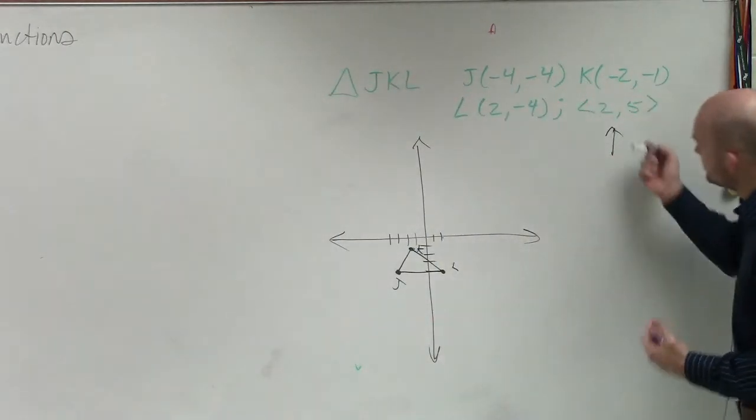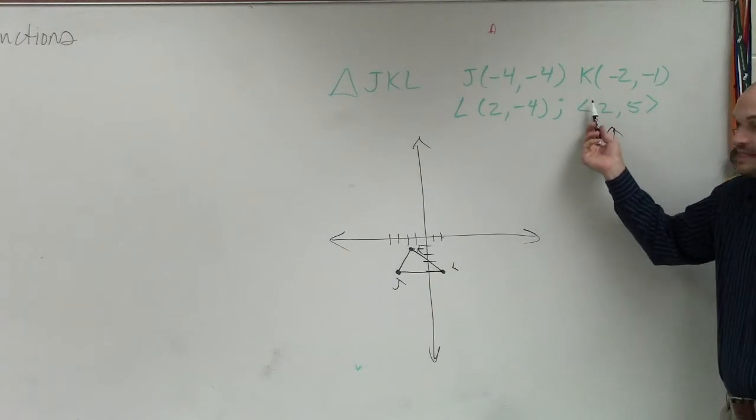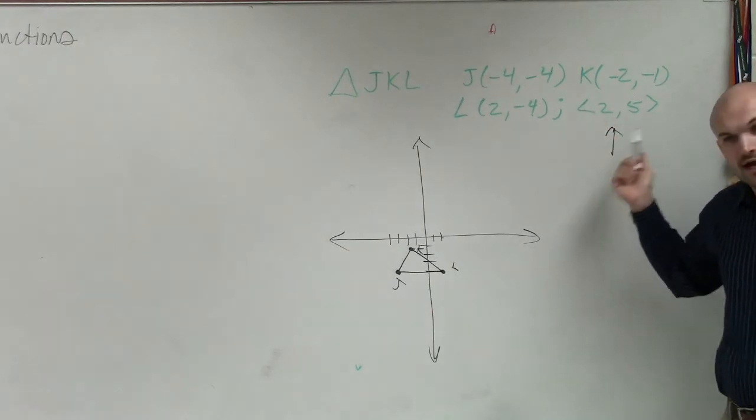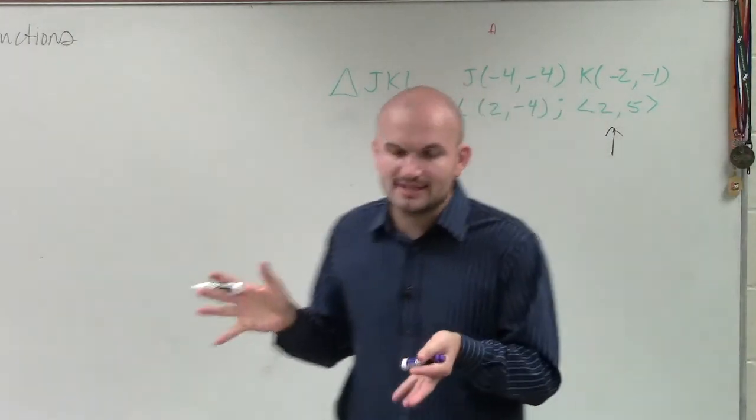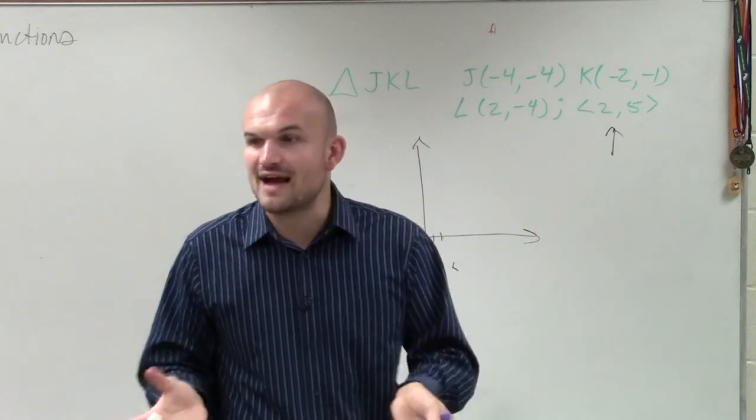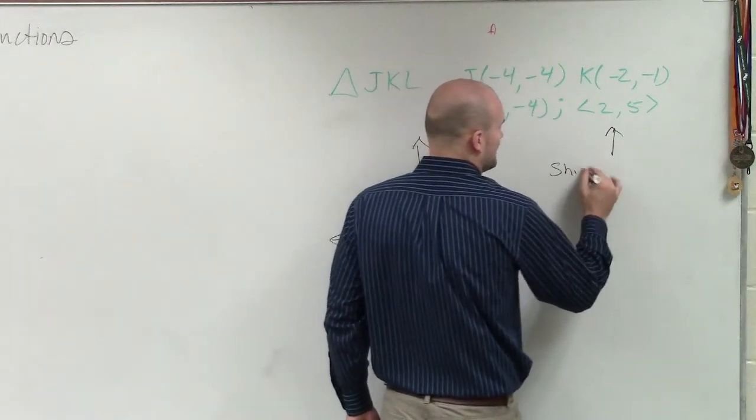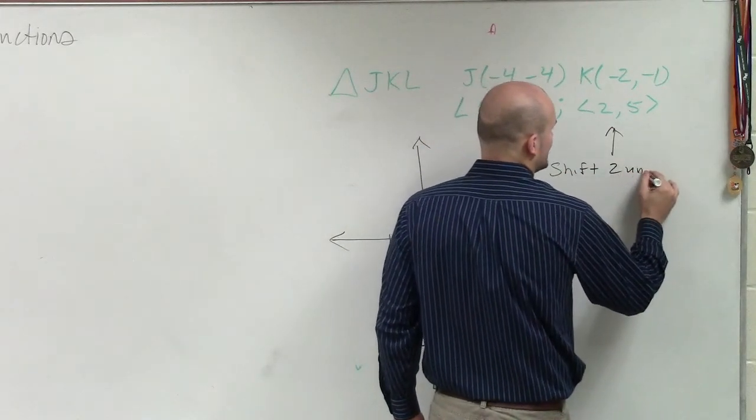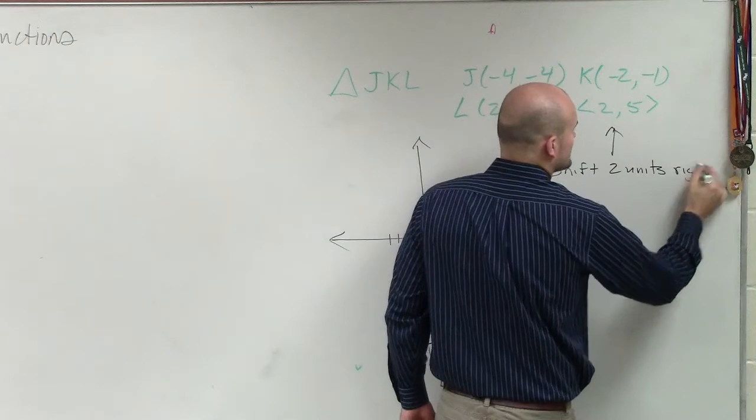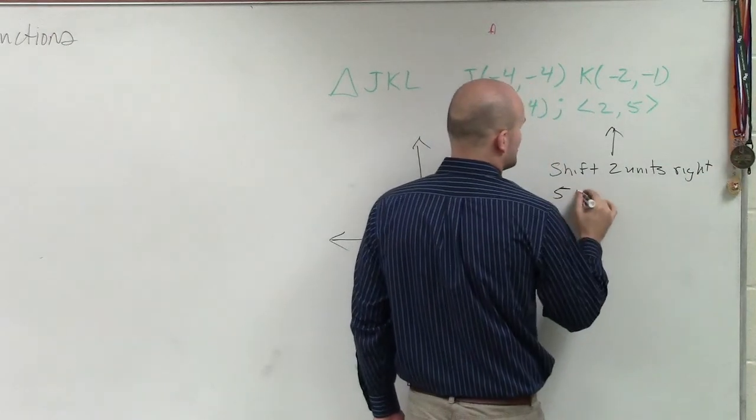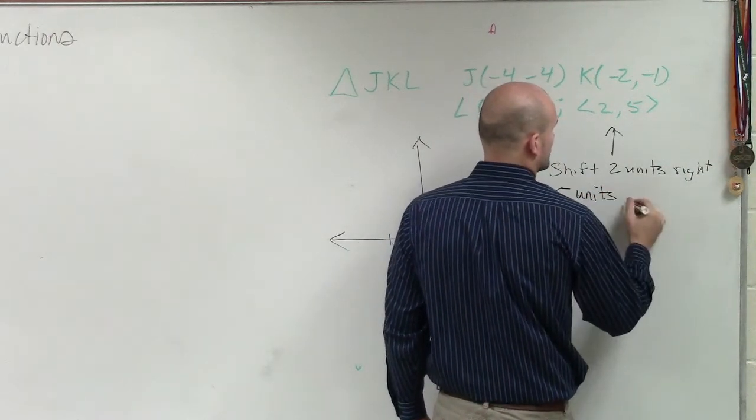And remember, what the pointed parentheses say is we're going to now transform this by the vector 2, 5. And what that is telling you is to shift 2 units to the right and 5 units up.